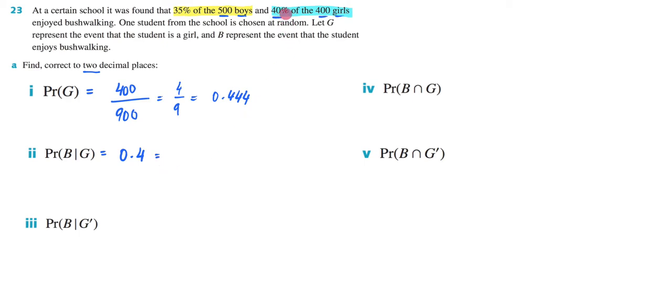But I kind of want to show you how we know that. So we know that 40% of the girls enjoy bushwalking. Well, what is 40% of 400? And hopefully, you know the answer to that. It is 160.